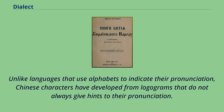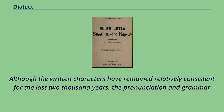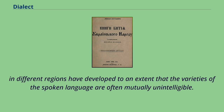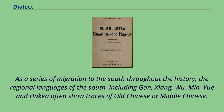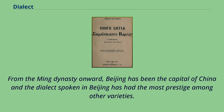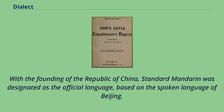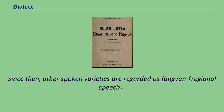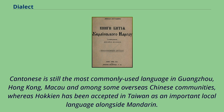Unlike languages that use alphabets to indicate pronunciation, Chinese characters have developed from logograms that do not always give hints to their pronunciation. Although the written characters have remained relatively consistent for the last 2,000 years, the pronunciation and grammar in different regions have developed to an extent that the varieties of the spoken language are often mutually unintelligible. The regional languages of the South — including Gan, Xiang, Wu, Min, Yue, and Hakka — often show traces of Old Chinese or Middle Chinese. From the Ming dynasty onward, the Beijing dialect gained the most prestige, and with the founding of the Republic of China, Standard Mandarin was designated as the official language based on the spoken language of Beijing, after which other spoken varieties are regarded as Fangyan. Cantonese remains the most commonly used language in Guangzhou, Hong Kong, Macau, and among some overseas Chinese communities, whereas Hakka has been accepted in Taiwan as an important local language alongside Mandarin.